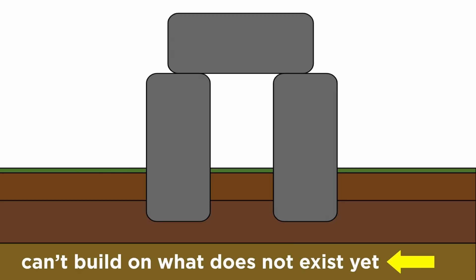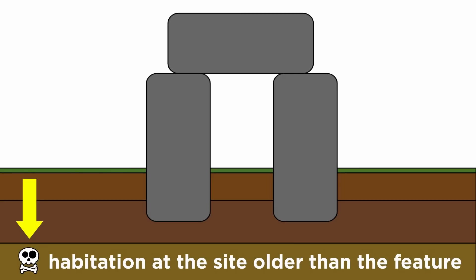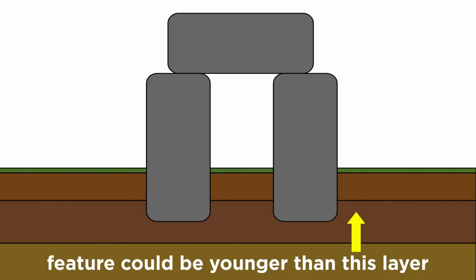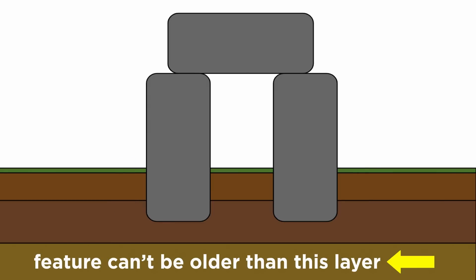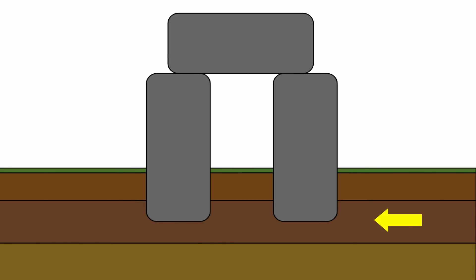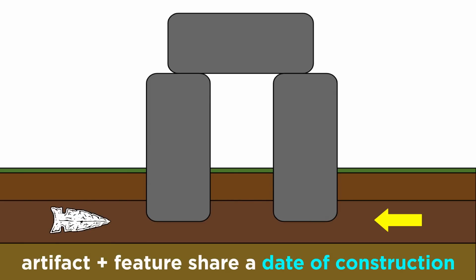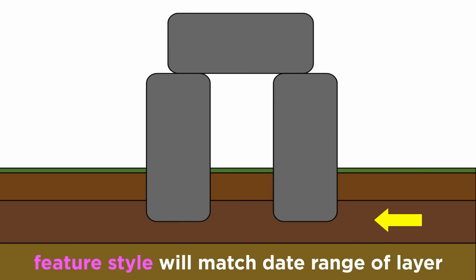The builders couldn't have built the monument on a soil layer that didn't exist yet. We might find habitation on a site goes back farther than we thought, but that feature can't get any older. It can be younger than this level, having been pushed into the ground by the builders, but it can't be older. The layer the features date to likely has artifacts that fit into the typologies of the region. All these artifacts must also date to the period of construction for the feature due to the Law of Superposition, a date further strengthened by the serialization of the artifacts. Furthermore, the feature itself is usually associated with the style of feature present in many sites, which all corroborate a date range.